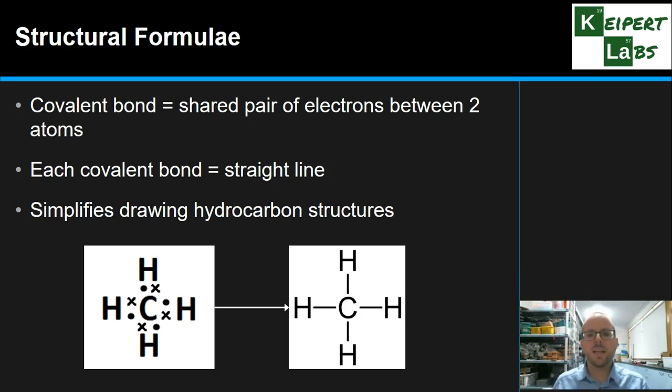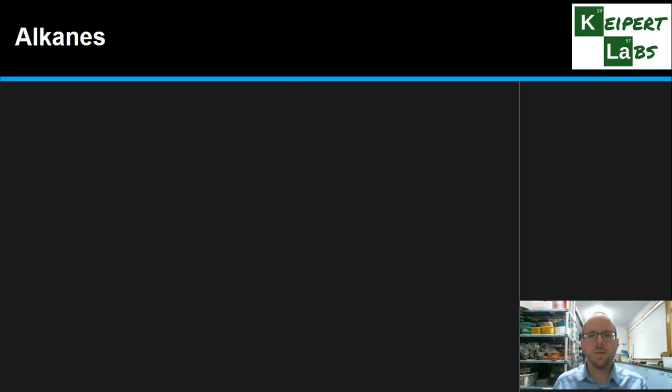So it gives us a technique to be able to represent these types of compounds. So let's start having a look at a few. We're going to start by looking at alkanes. Alkanes are arguably the simplest types of hydrocarbons that we could encounter in the chemistry lab.